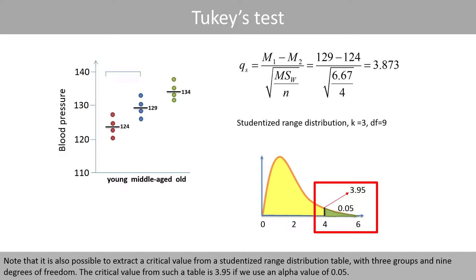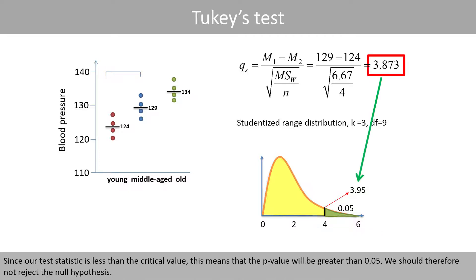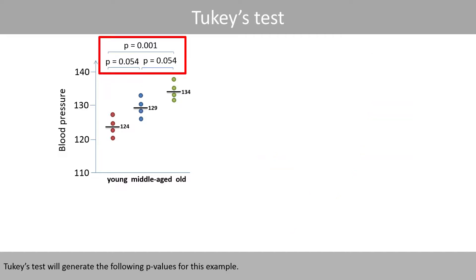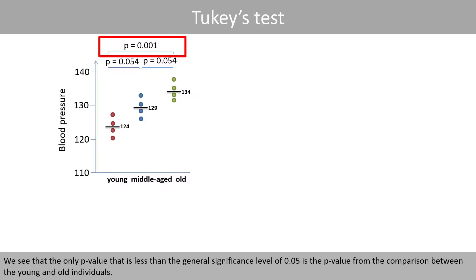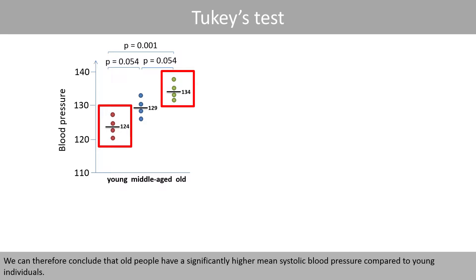It is also possible to extract the critical value from a studentized range distribution table with three groups and 9 degrees of freedom. The critical value is 3.95 using an alpha of 0.05. Since our test statistic of 3.873 is less than the critical value of 3.95, the p-value is greater than 0.05 and we should not reject the null hypothesis. Looking at all pairwise comparisons, the only p-value less than 0.05 is from the comparison between young and old individuals. We can therefore conclude that old people have a significantly higher mean systolic blood pressure compared to young individuals.